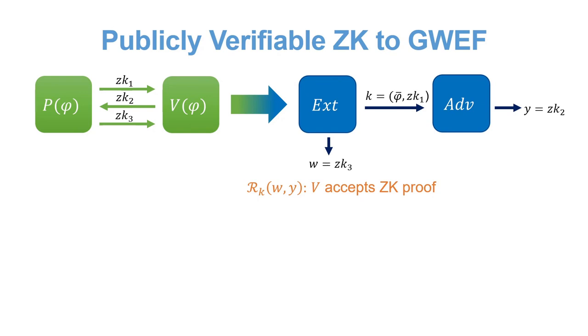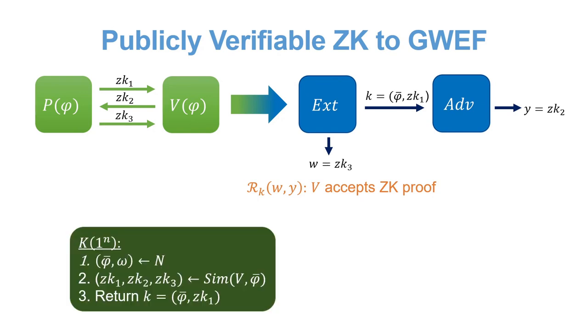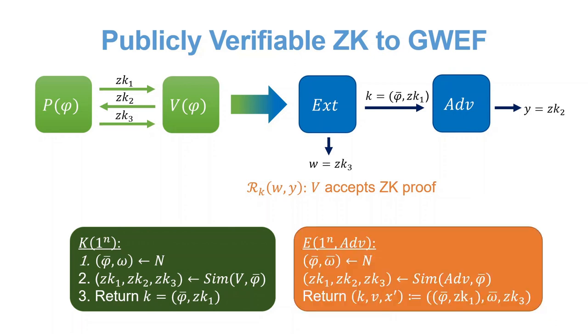Finally, we have the key sampler, which samples no statements, and uses the simulator over the honest verifier to generate a simulated first message. Note that in fact, it could have used any arbitrary code, as the first message alone can be simulated without the code of the verifier. The extractor also samples a no instance and uses the adversary's code to generate an accepting transcript, which it will use to find a witness.